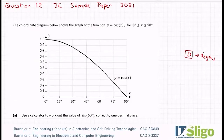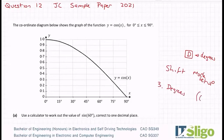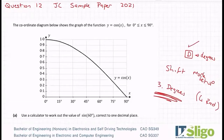If you need to change it, go shift, mode, setup. I'm on a Casio FX 83 GT — 3 is for degrees and 4 is for radians. You'll always need 3 for degrees, so that's how you get that degree symbol up the top. Have a little look and make sure you're in degrees.